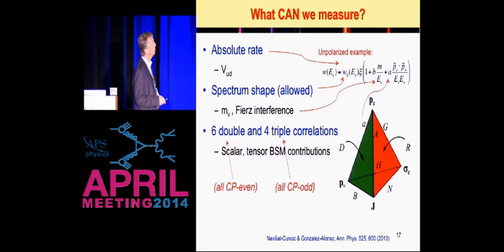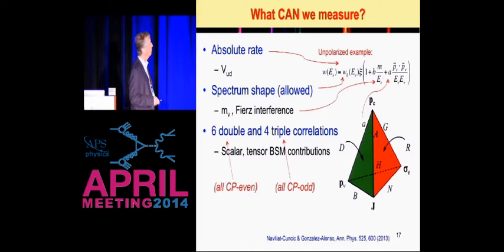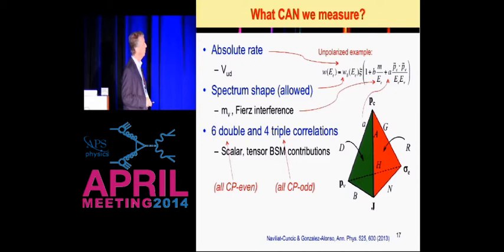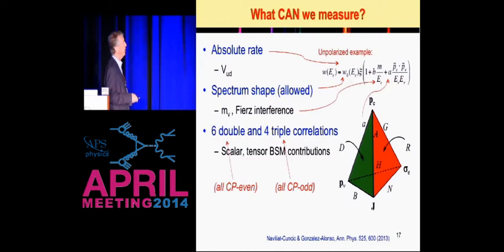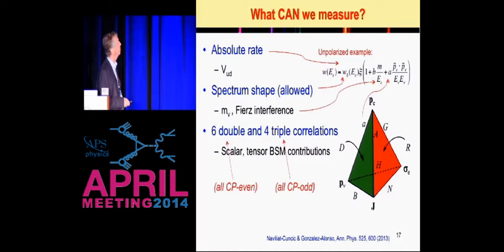And then you can look at the correlation terms. For an unpolarized source, there is the electron-neutrino correlation with a constant A, which is characteristic of the interaction. There's a nice ideogram for how to sort out all the alphabet soup of these various correlations. The two sides of this pyramid are double correlations — like the electron-neutrino correlation or various momentum-spin correlations or spin-spin correlations. And the faces represent three triple correlations, which all turn out to be CP-odd. That was actually among the most interesting reasons for Jackson, Treiman, and Wyld developing the theory which we now use to study this in beta decay.